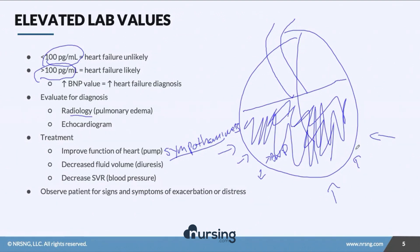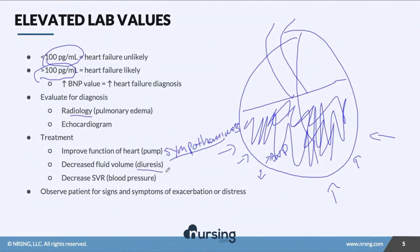We also want to decrease our fluid volume — that's the core problem here. BNP is going out trying to get this volume down through natriuresis, but the heart isn't able to get rid of it. To help decrease that volume, we can give diuretics or ARBs.